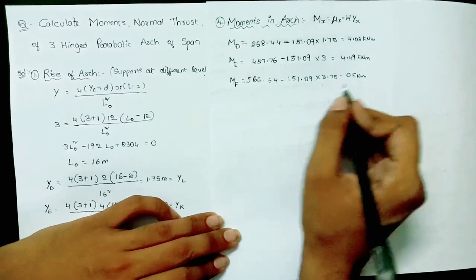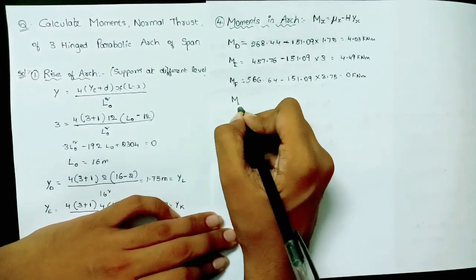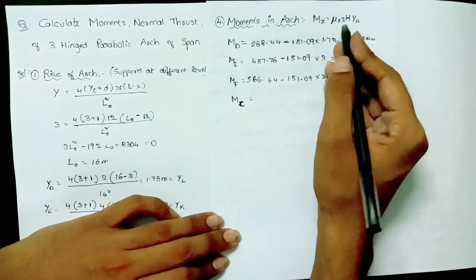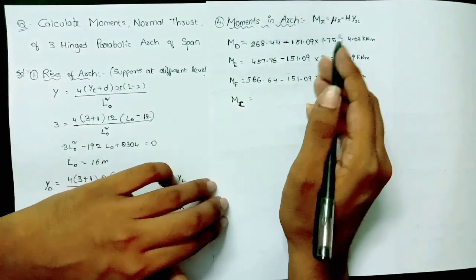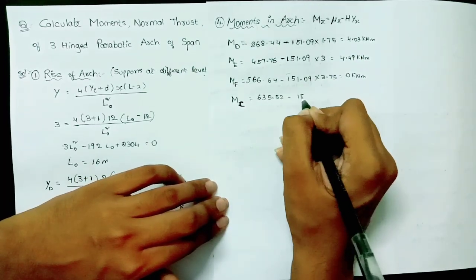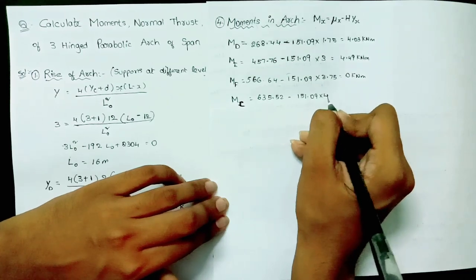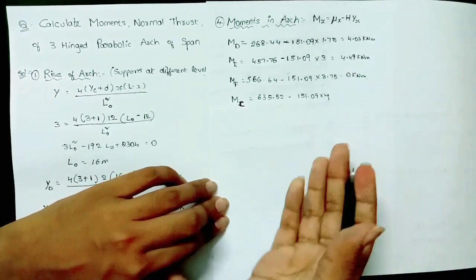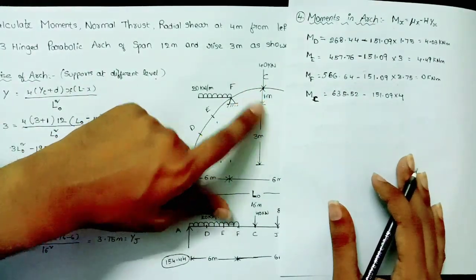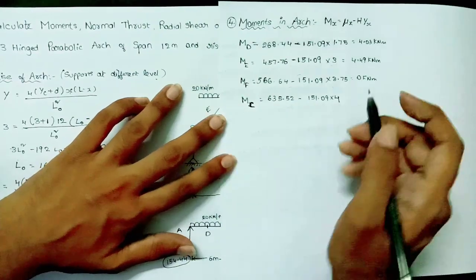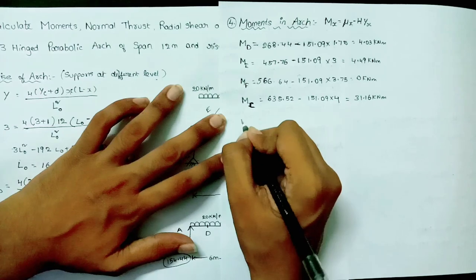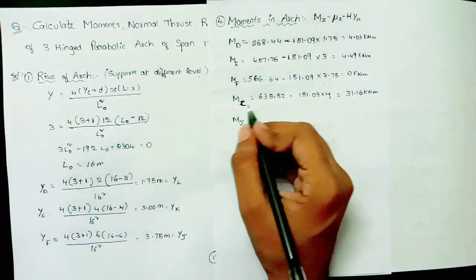At C: M_C = 635.52 − 151.09 × (3 + 1) = 635.52 − 604.36 = 31.16 kN·m. Here yC is taken as 4 meters because the rise from support A up to C is 3 m plus the 1 m level difference.